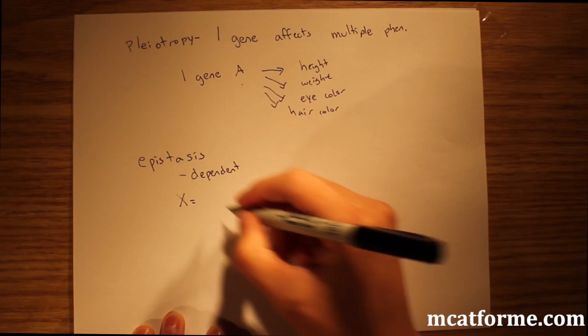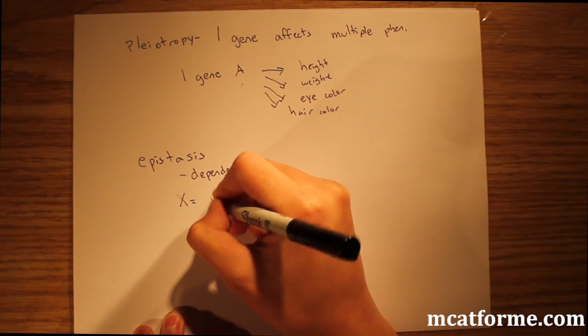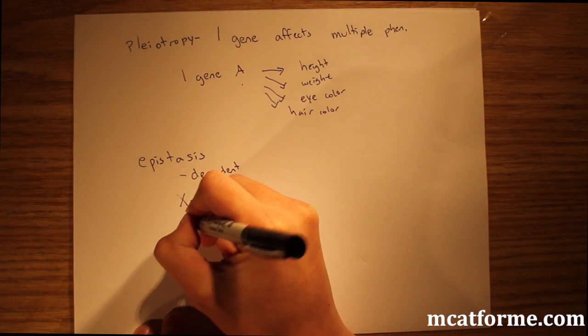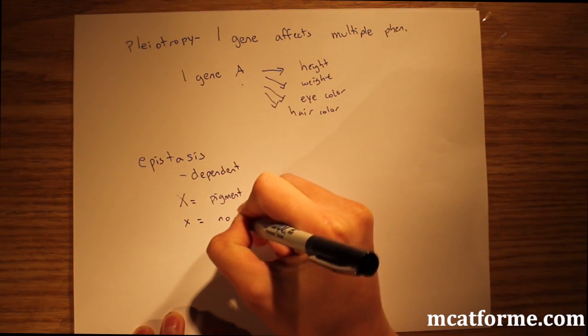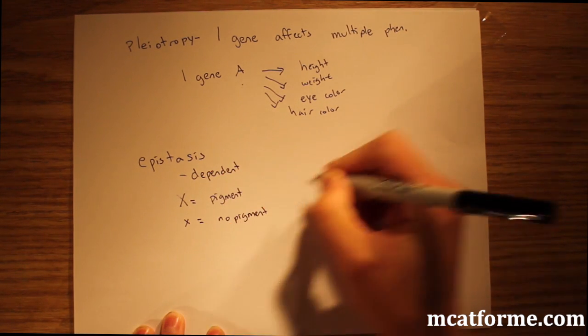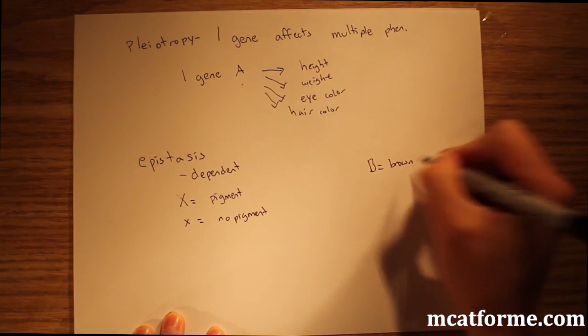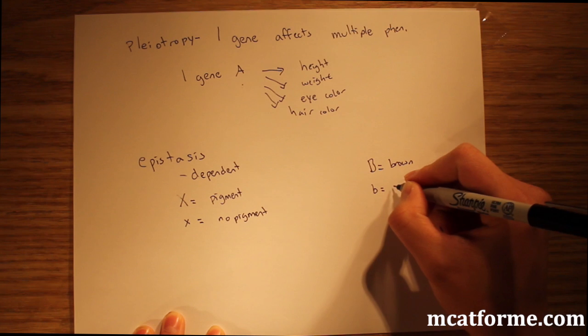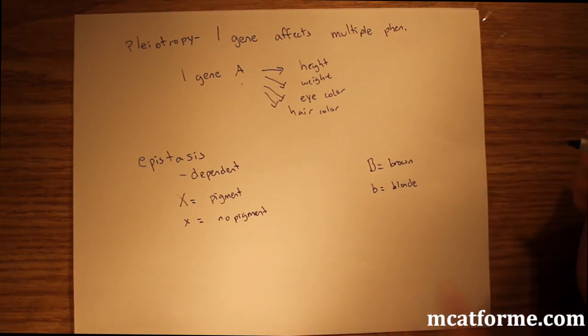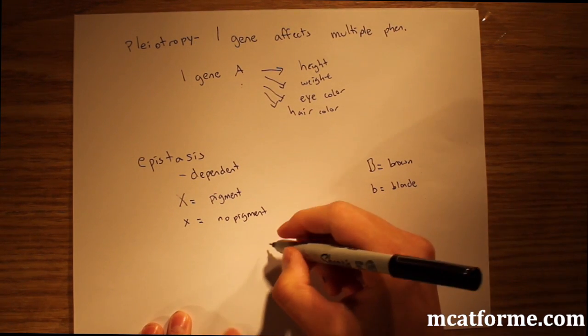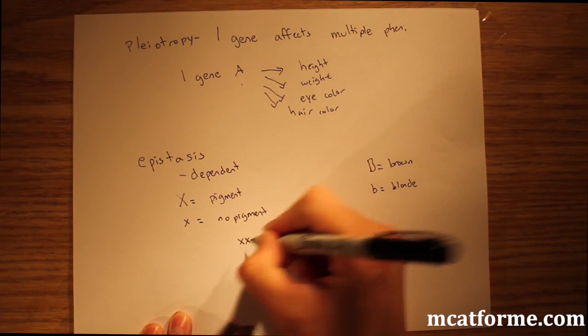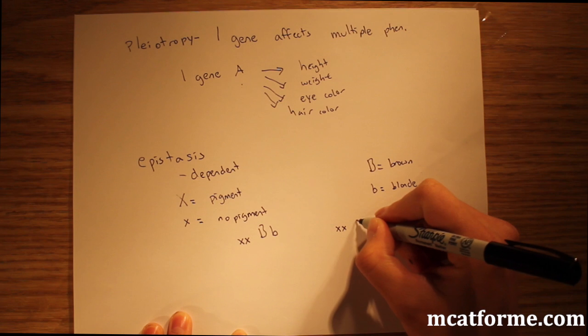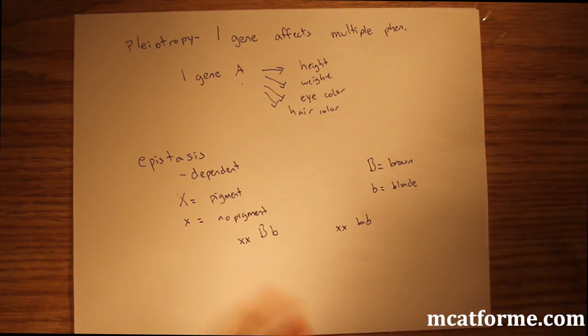So big X means they have pigmented, the dominant trait is pigmented, and little x equals no pigment. We'll say big B equals brown, maybe brown colored hair, and this would be maybe blonde. Little b is blonde. So if an individual has little x little x, big B little b, or little x little x little b little b, what will the color be?